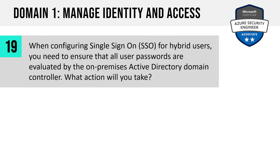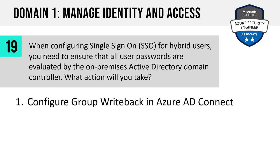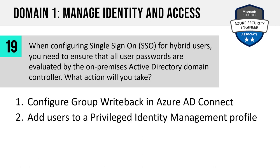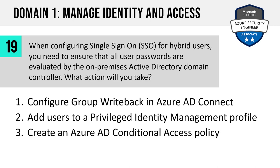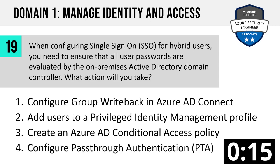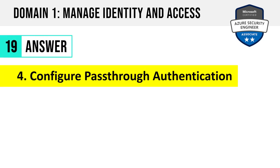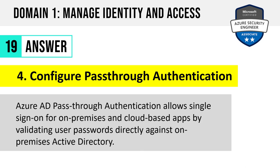Question 19. When configuring single sign-on for hybrid users, you need to ensure that all user passwords are evaluated by the on-premises Active Directory domain controller. What action will you take? Configure group write-back in Azure AD Connect, add users to a PIM profile, create an Azure AD Conditional Access Policy, or configure Azure AD Pass-Through Authentication? The answer is four: configure Pass-Through Authentication. Azure AD Pass-Through Authentication allows single sign-on for on-premises and cloud-based apps by validating user passwords directly against on-premises Active Directory, opening the door for leveraging Active Directory features not present in Azure AD, like log-on hours.